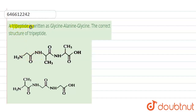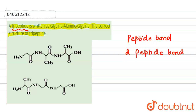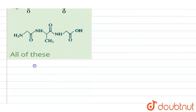The question is: a tripeptide is written as glycine, alanine, and glycine — we have to identify the correct structure. So here we have glycine, alanine, and glycine as our amino acids. When we have the formation of a tripeptide, we have peptide bonds. In this structure we will have two peptide bonds.